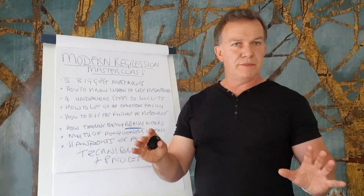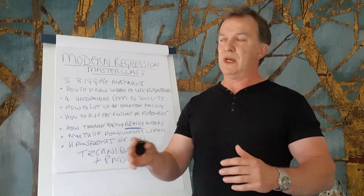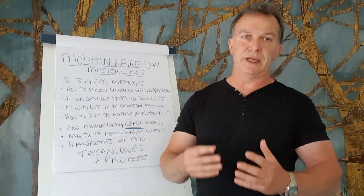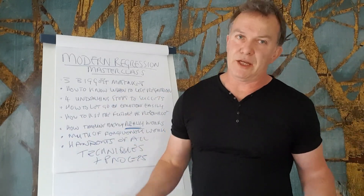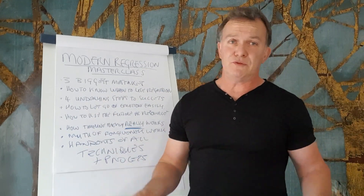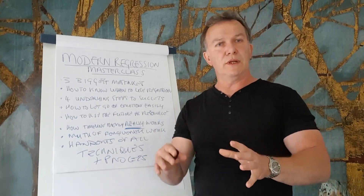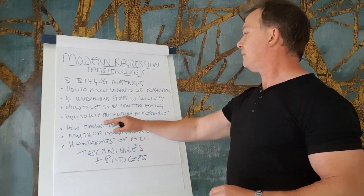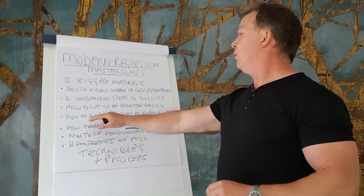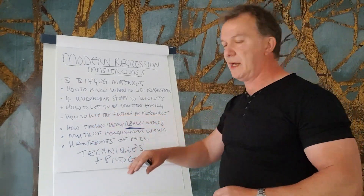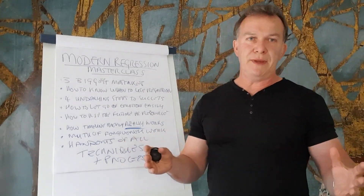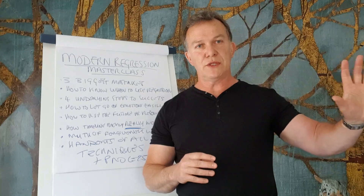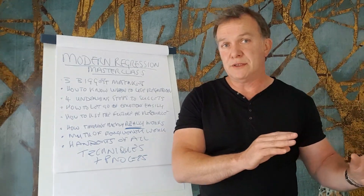Then we're going to look at how to let go of emotions easily. One of the big problems with traditional age regression methods is that it tends to be very, very hard on the client — there's screaming and shouting, and it can be very draining on both the client and the therapist. We'll look at how you can let go of emotions very easily. Then we're going to learn how to use the future as a resource, because you can get resources from the future, not just the past.